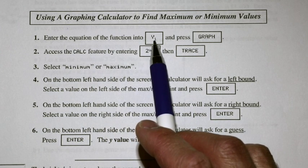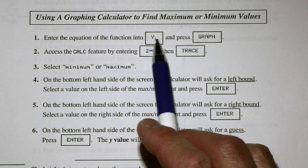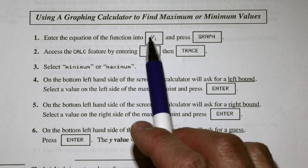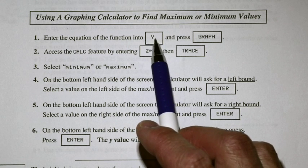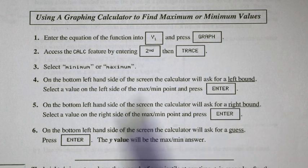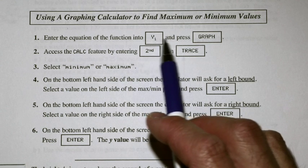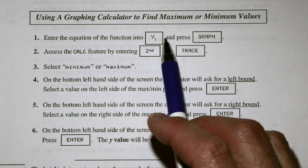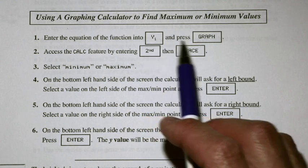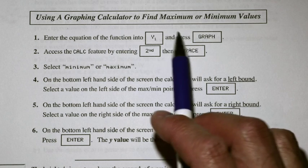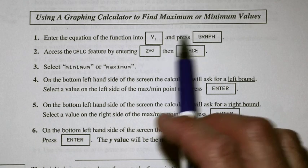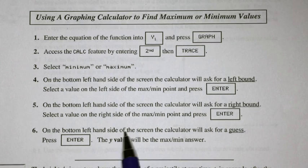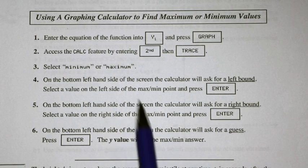You could enter the equation into Y1, Y2, or Y3, but generally if you're just looking for one, we might as well put it into Y1 and then press graph. We have the equation and we put it into Y1, which is going to be ax squared plus bx plus c, or another form that is easy enough to graph.